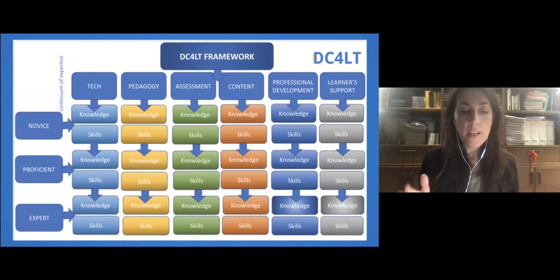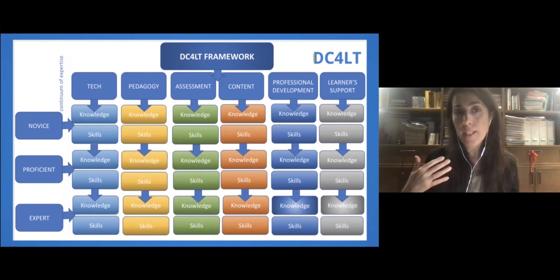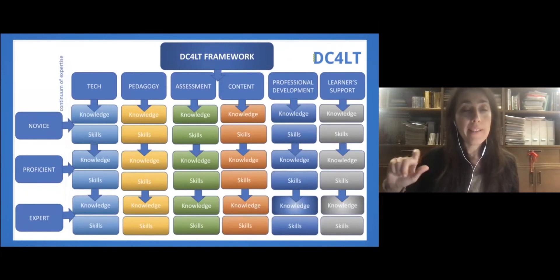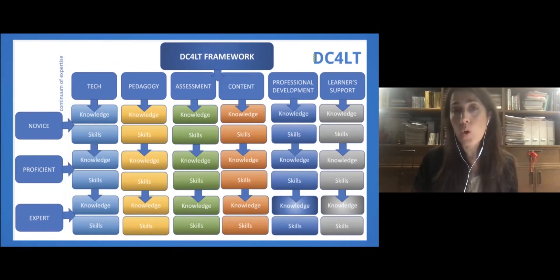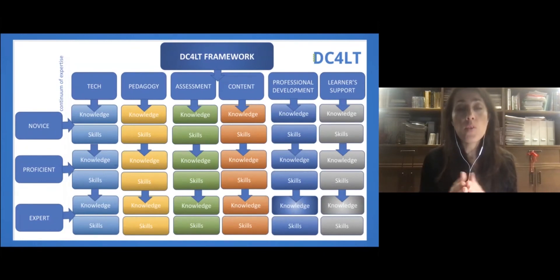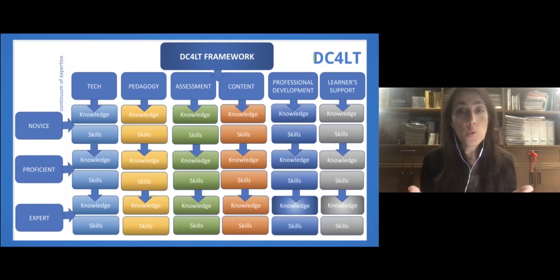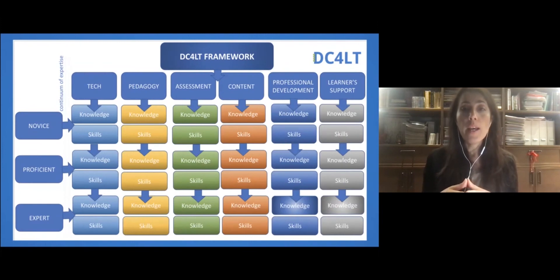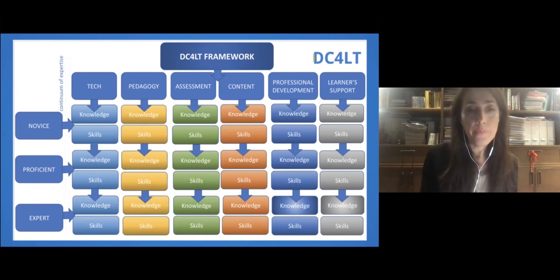Here is the framework: we have six different categories — technology, pedagogy, assessment, content, professional development, and learning support. Each category includes a set of five concrete subcategories. The first category, technology, includes the description of knowledge and skills related to the efficient use of technology in the context of language education. The second category, pedagogy, presents the pedagogical perspective of technology use — being digitally competent as a language teacher doesn't mean only knowing how to use technology, but knowing how to implement it in line with sound pedagogy. We also need to know how to do digital online assessment, how to create open educational resources and digital materials, how to grow in professional development, and how to support our learners.